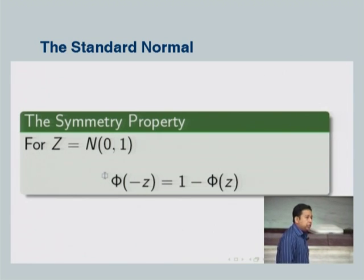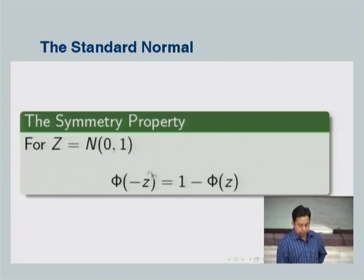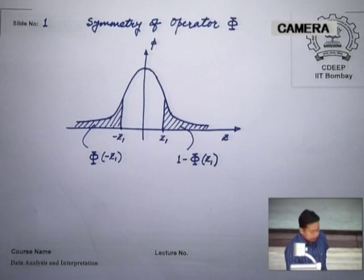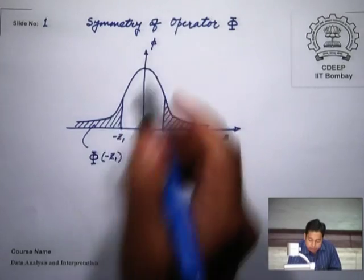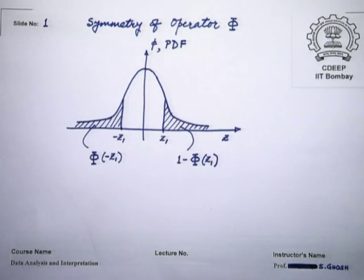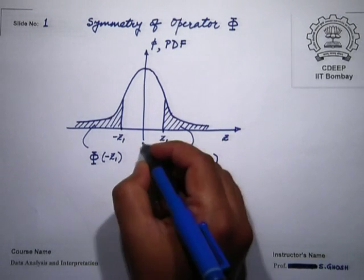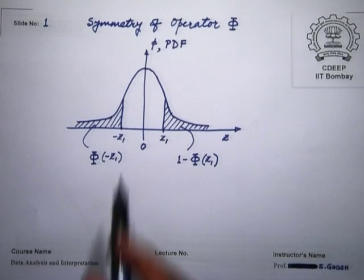Let us discuss a key property of the standard normal random variable. If we have standard normal z, then the CDF at minus z equals 1 minus the CDF at z. The PDF of the standard normal has its mean at 0 and the normal random variable is symmetric about the mean, so we have symmetry about 0.